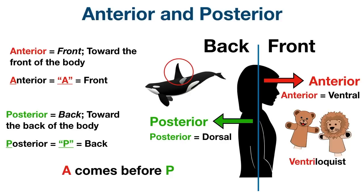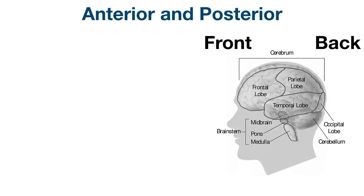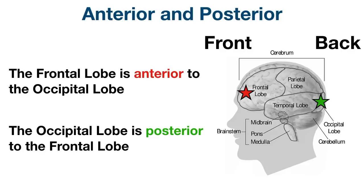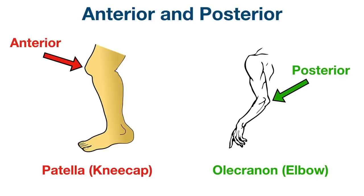Let's look at some examples of anterior and posterior. If we look at a side view of the brain, the frontal lobe is anterior to the occipital lobe, and the occipital lobe is posterior to the frontal lobe. The patella or kneecap is located on the anterior side of the leg, and the olecranon or elbow is located on the posterior side of the arm.